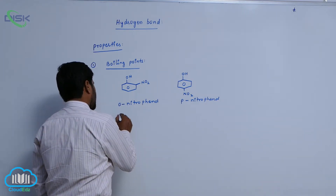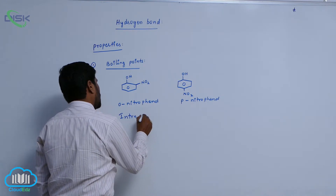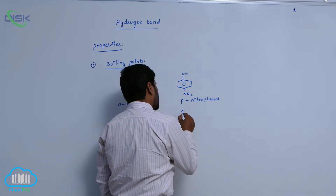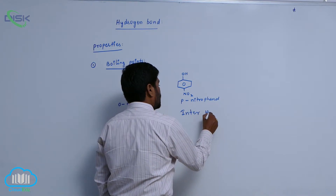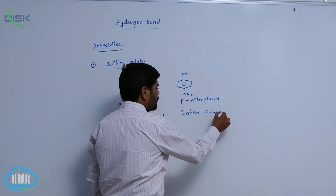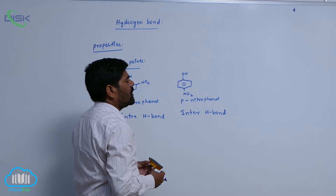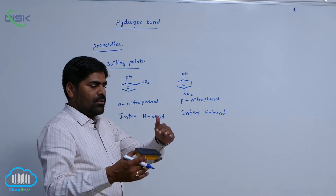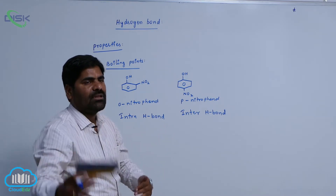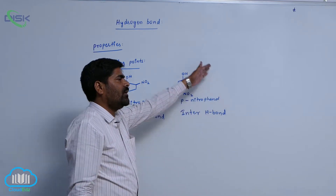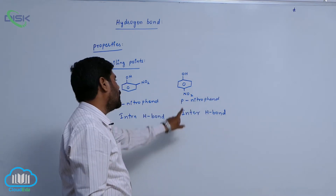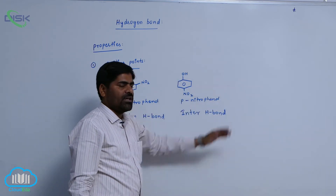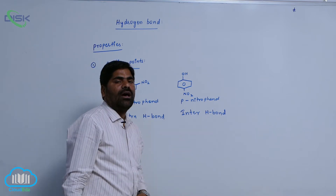Ortho-nitrophenol forms intramolecular hydrogen bond, while para-nitrophenol forms intermolecular hydrogen bond. Due to formation of intermolecular hydrogen bond, one para-nitrophenol is combined with another para-nitrophenol, and that para-nitrophenol combines with the next. So association increases due to intermolecular hydrogen bond. When degree of association increases, strength of the hydrogen bond increases.